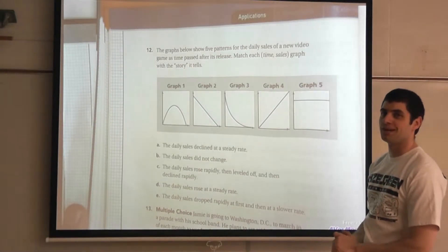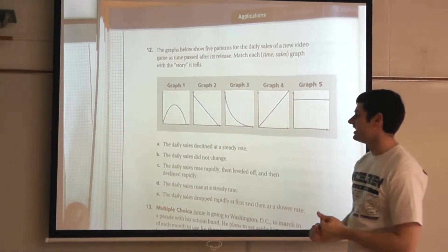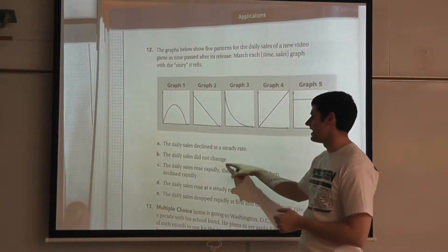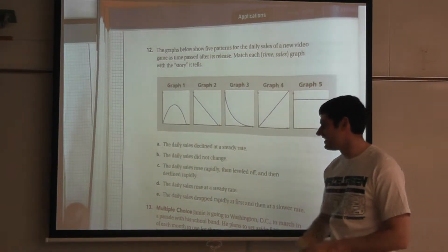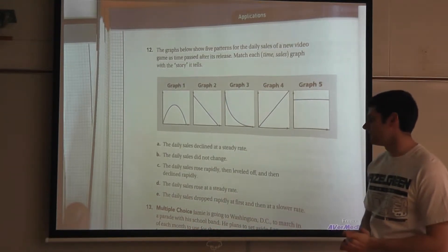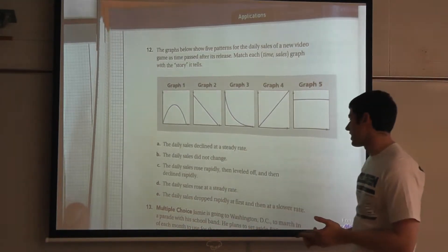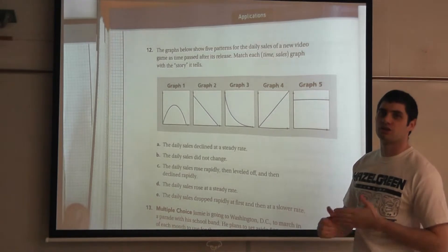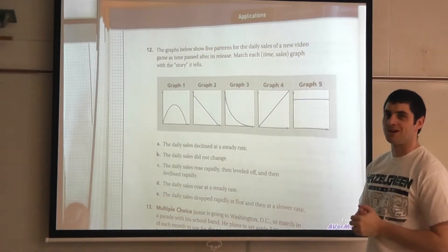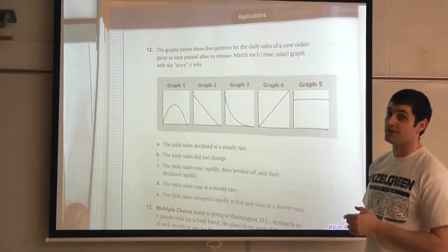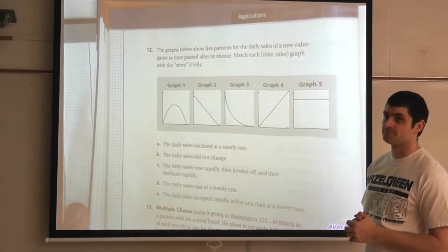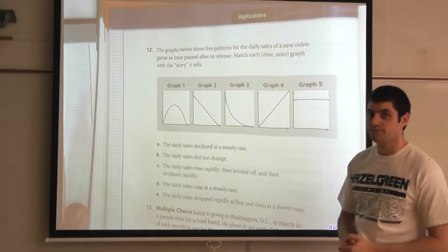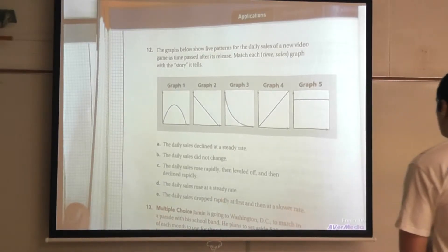All right. You guys have this next job. You're going to figure out the daily sales did not change. The daily sales rose rapidly then leveled off and then declined rapidly. The daily sales rose at a steady rate and the daily sales dropped rapidly at first and then at a slower rate. So go ahead and pause the video and we'll see if you're able to match the graphs with the stories.